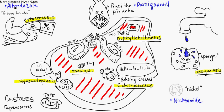Treat cysticercosis with albendazole if it's symptomatic. Taeniasis is an intestinal infection with adult tapeworm. You find it in cattle and pigs, and it occurs by ingesting poorly cooked beef and pork.